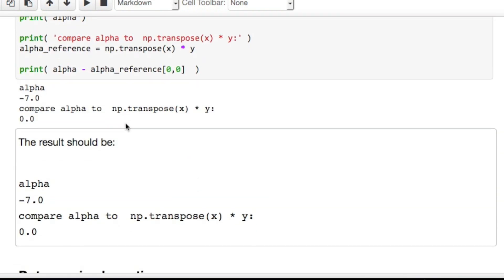And now I can execute this box. And what you notice is that the result is exactly the alpha that we should have computed. And if we compare this to the result that we computed with NumPy by doing transpose x times y, it is actually the same.